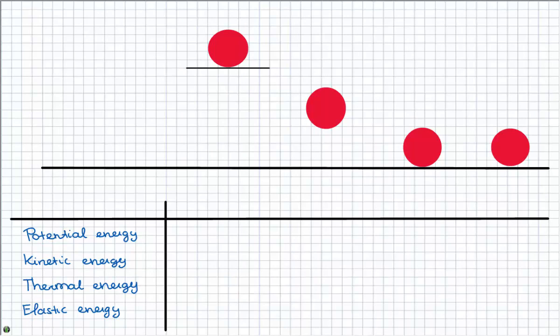This video is about different types of energy explained by the basketball example. I have drawn different basketballs as red circles over here and I named them 1, 2, 3 and 4.